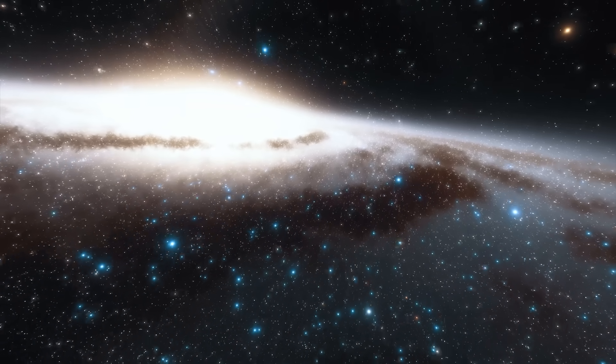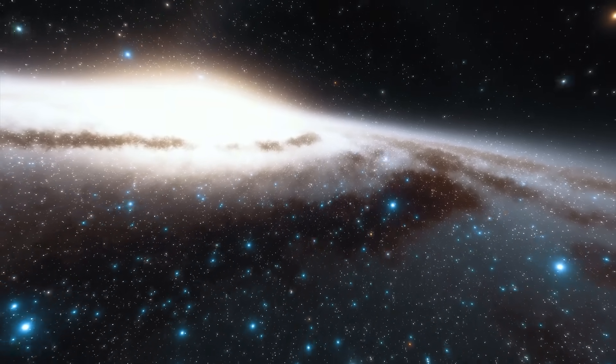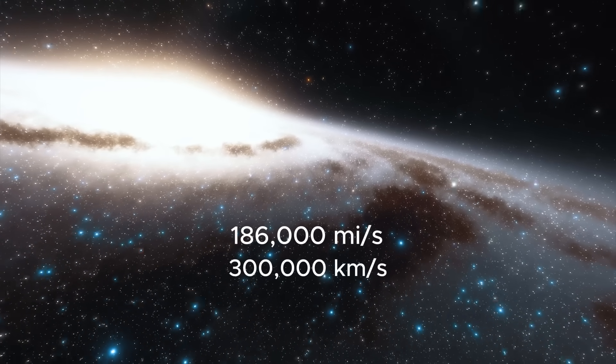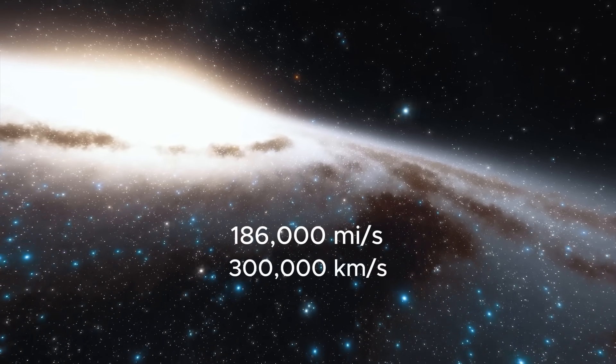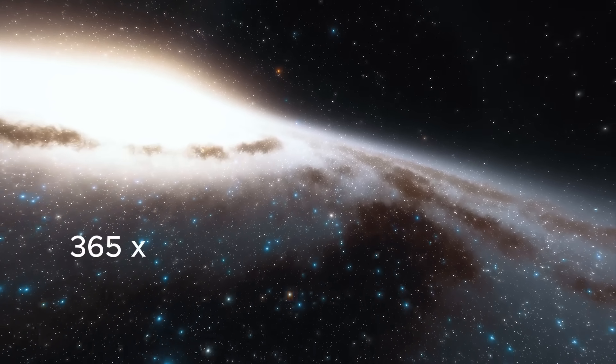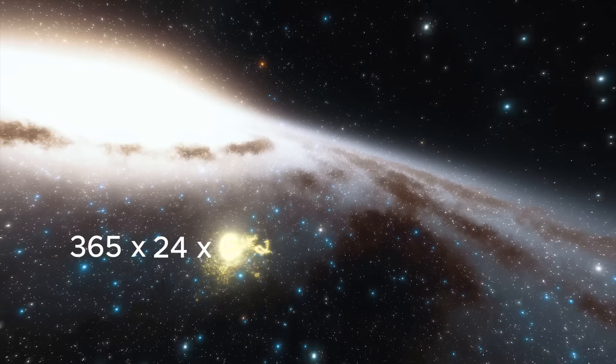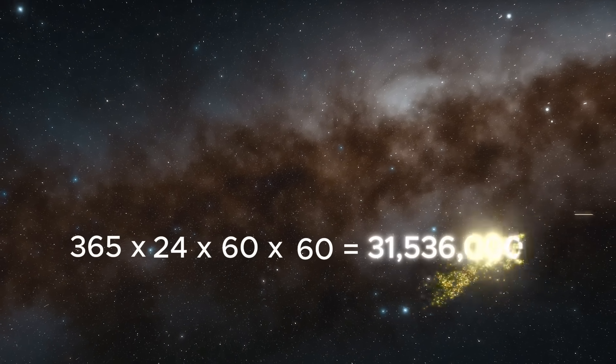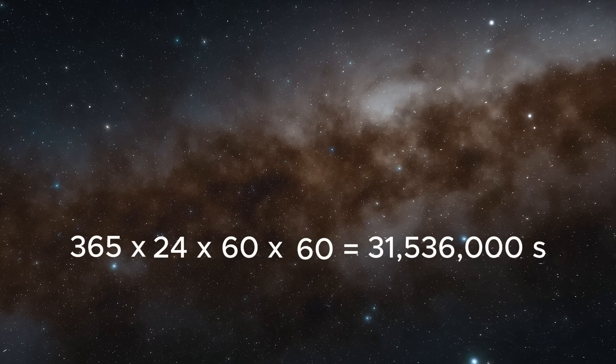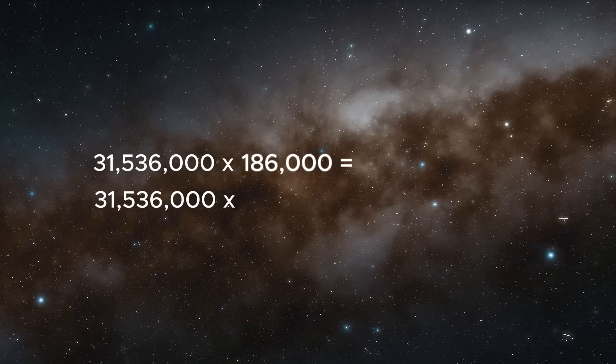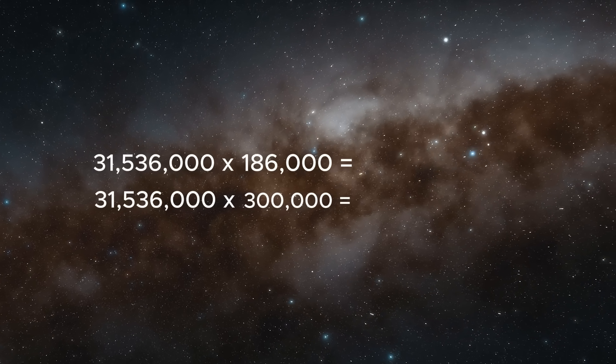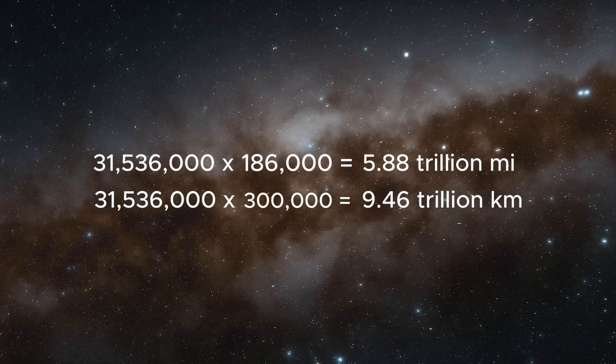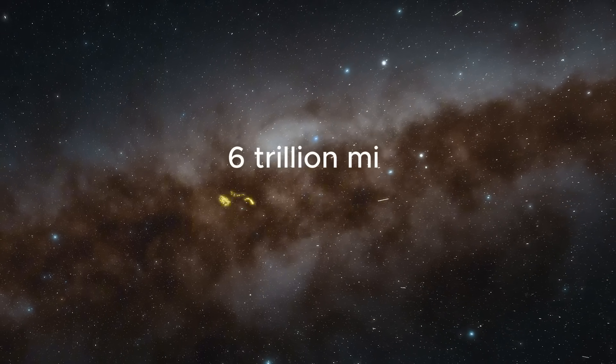Now that we know the speed of light, let's calculate the light year distance in kilometers and miles. Since light travels 186,000 miles or 300,000 kilometers per second, we need to calculate how many seconds are in a year. A year is 365 days, each day is 24 hours, each hour is 60 minutes, and each minute is 60 seconds. When we multiply all these values, we get 31,536,000 seconds. Multiplying this by 186,000 miles or 300,000 kilometers gives us 5.88 trillion miles or 9.46 trillion kilometers—roughly 6 trillion miles or 10 trillion kilometers.